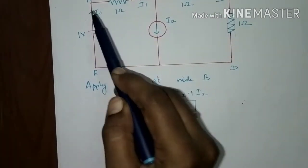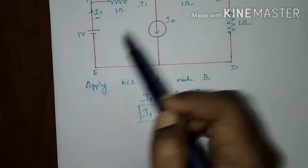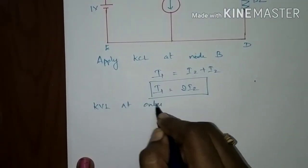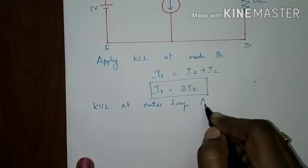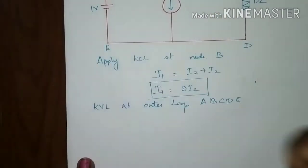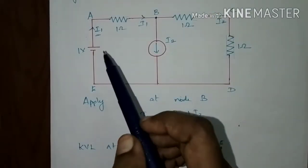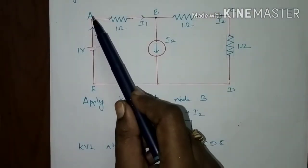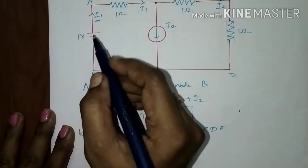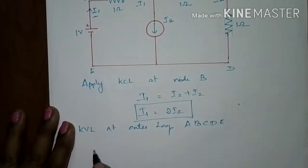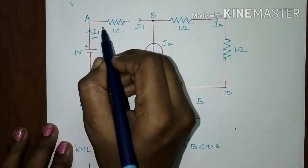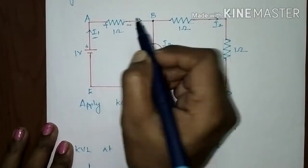Now to find the value of this current, apply KVL — Kirchhoff's Voltage Law — at the outer loop, across A-B-C-D-E, from the positive terminal to the negative terminal of the battery. Applying KVL from the positive terminal: the current entering a resistance produces a potential fall — the entering end is positive and the leaving end is negative.